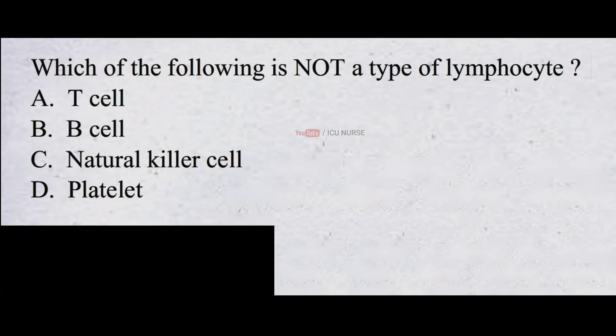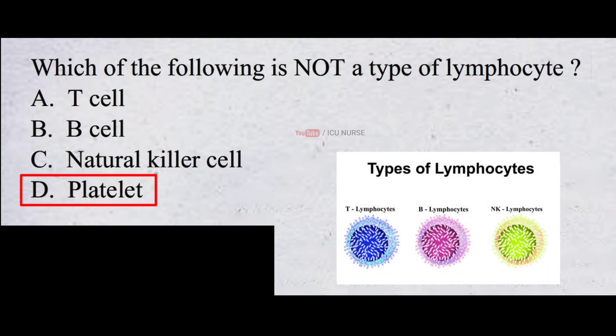Which of the following is not a type of lymphocyte? A. T cell B. B cell C. Natural killer cell D. Platelet. The correct answer is D. Platelet. T cells, B cells, and natural killer cells are all types of lymphocytes.